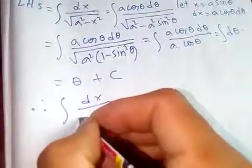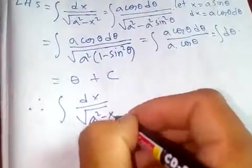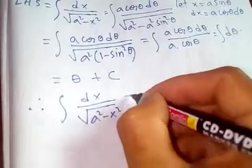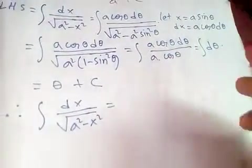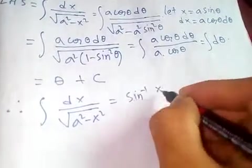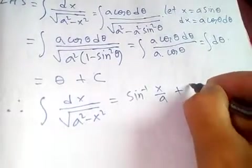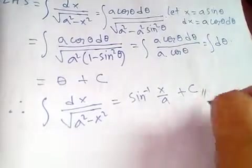Integral of dx over square root of a squared minus x squared equals theta, which is sine inverse of x over a plus constant of integration C.